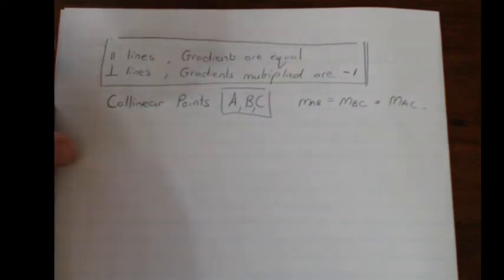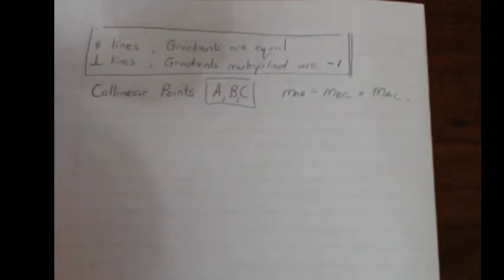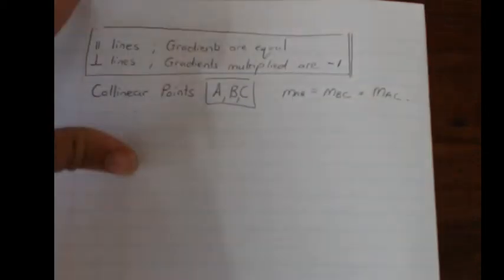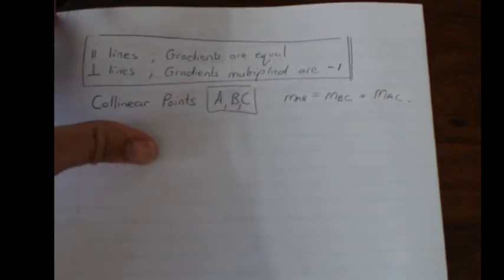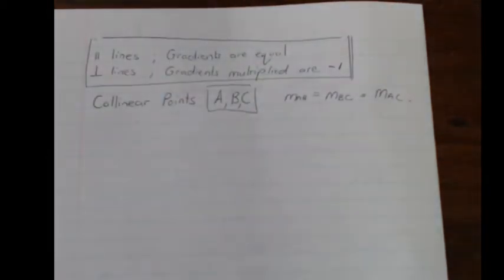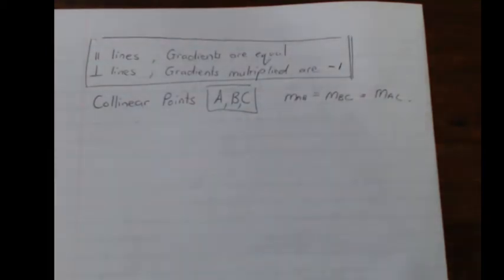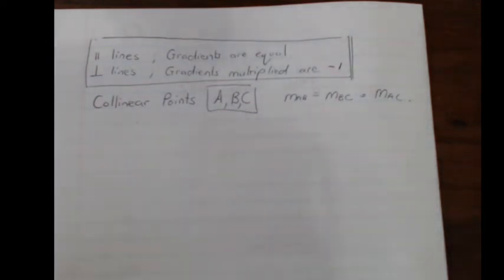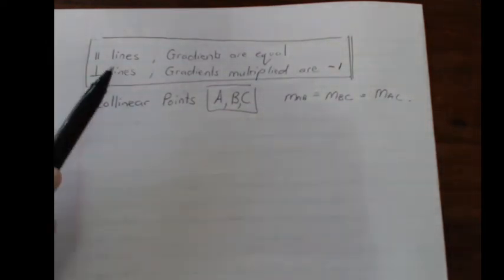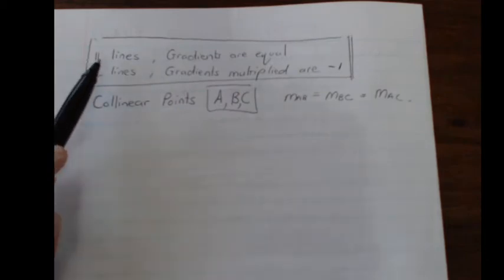Welcome learners. This is the third lesson on grade 11 analytical geometry. Today we are looking at parallel and perpendicular lines and the effect that it has on gradients. This is something you should know — it's used a lot in grade 11 and grade 12, so just be aware of this.